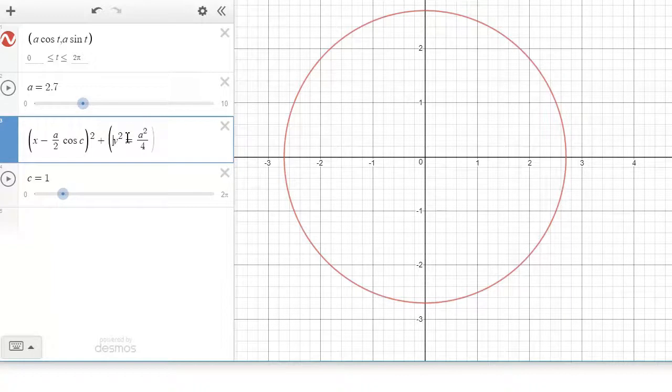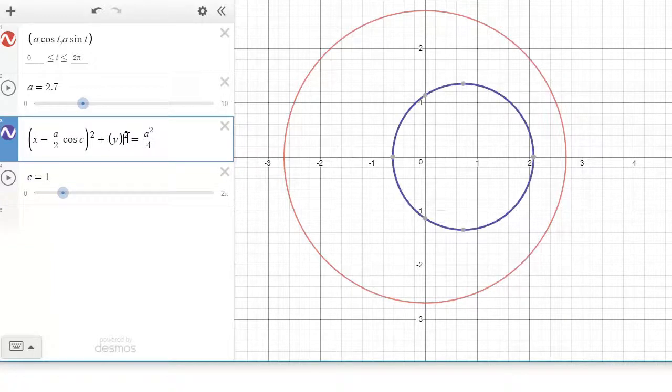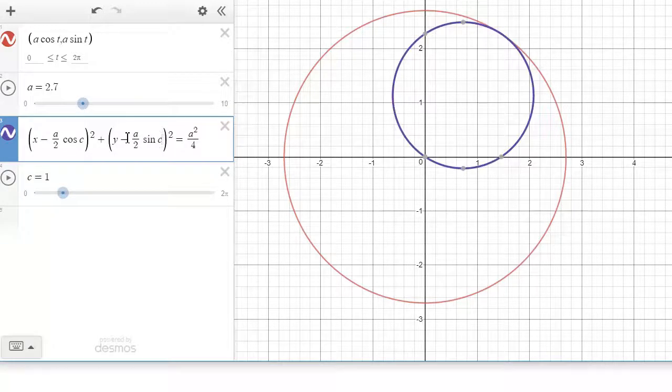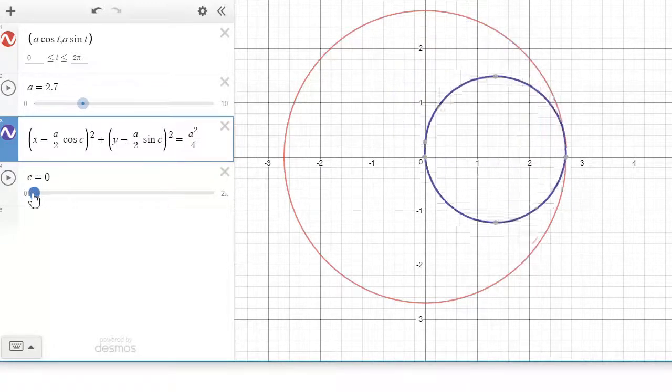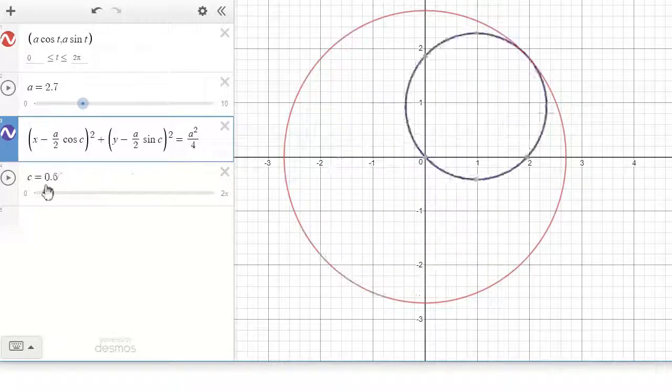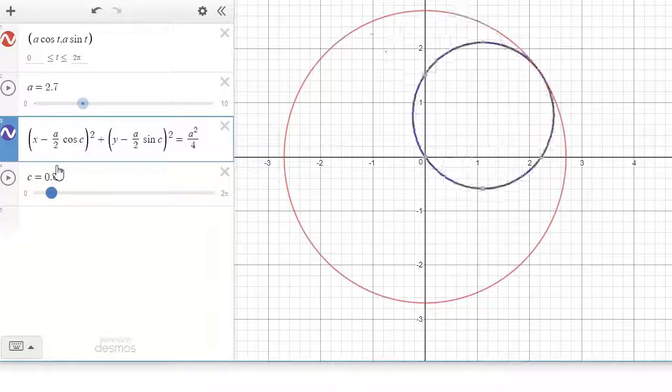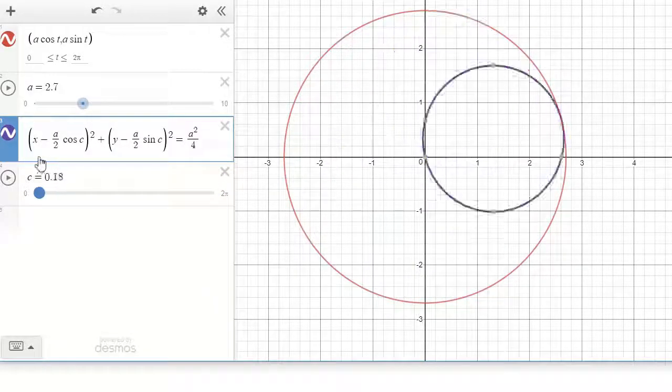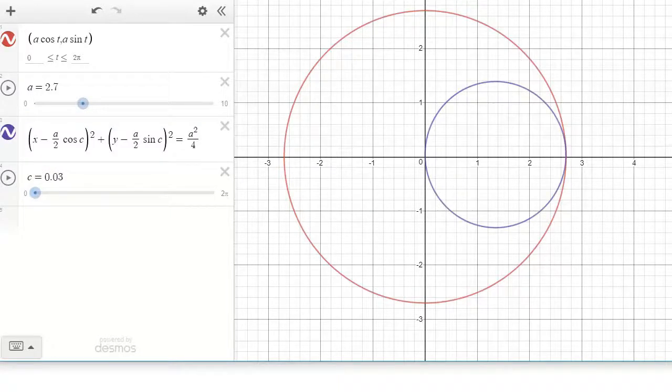That would be minus A over 2 sin C. So now, as you move C around from 0 to 2 pi, it's actually doing the right amount. Okay? I will continue in the next video. Yeah. That's great.